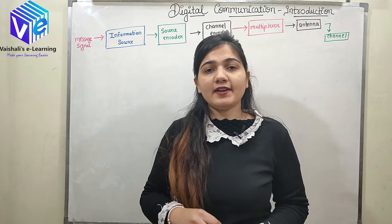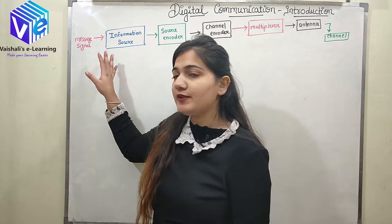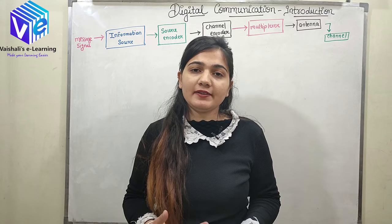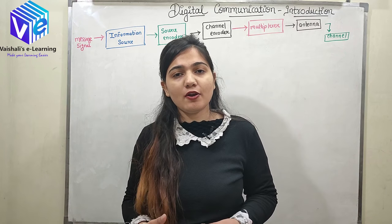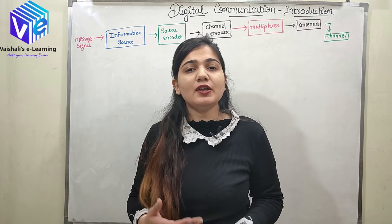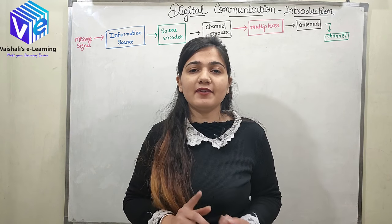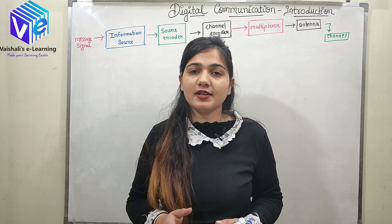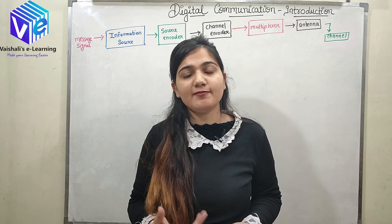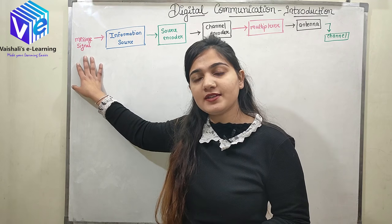This is the block diagram of the transmitter of digital communication. In the transmitting part we have the message signal. The message signal can be an analog message signal like voice, or it can be a digital or discrete message signal. For example, a picture is a discrete message signal. If I have a black and white picture then it is digital, because it is comprised of two levels only; otherwise it is discrete. So the message signal can be analog, discrete, or digital.